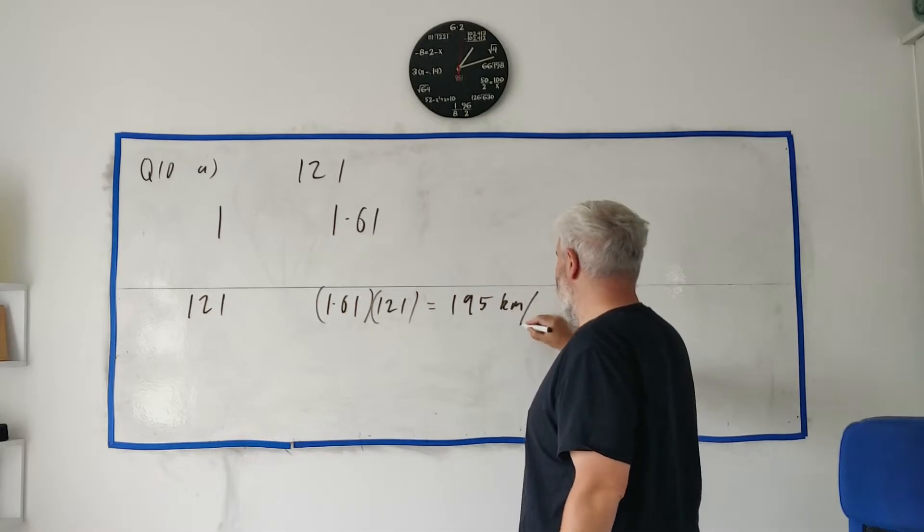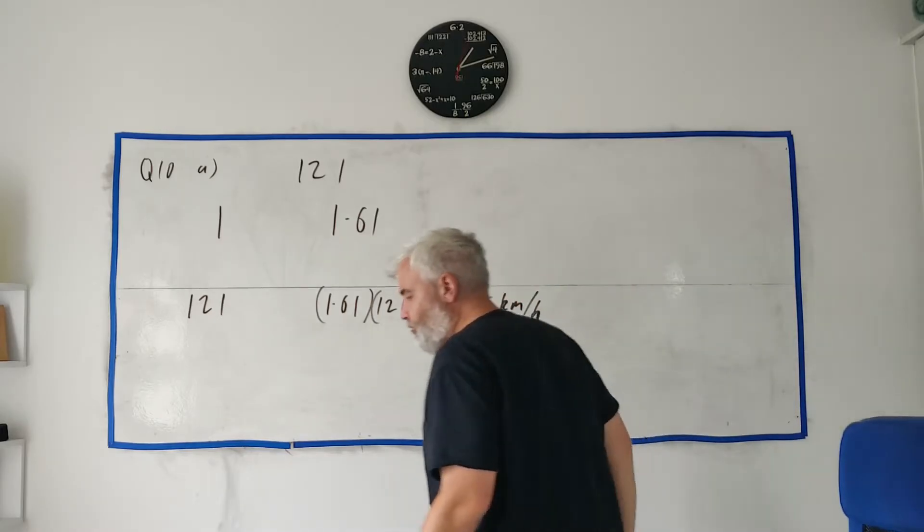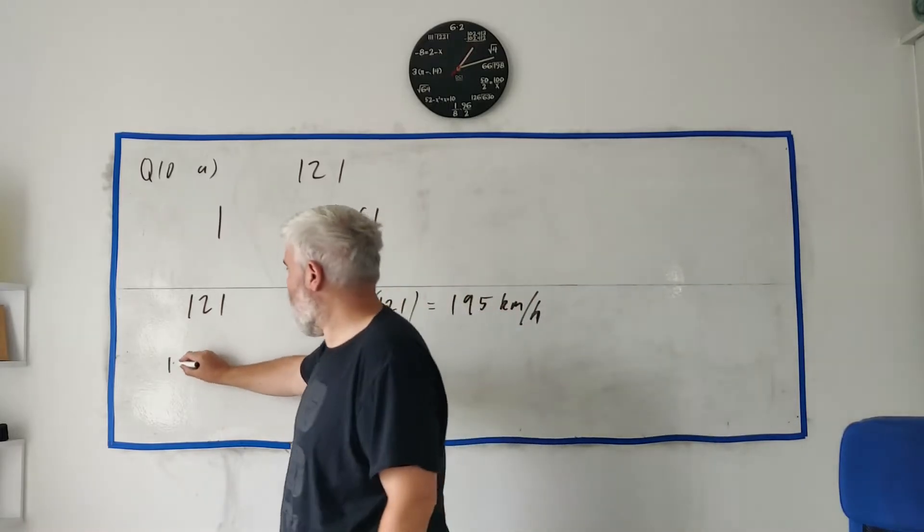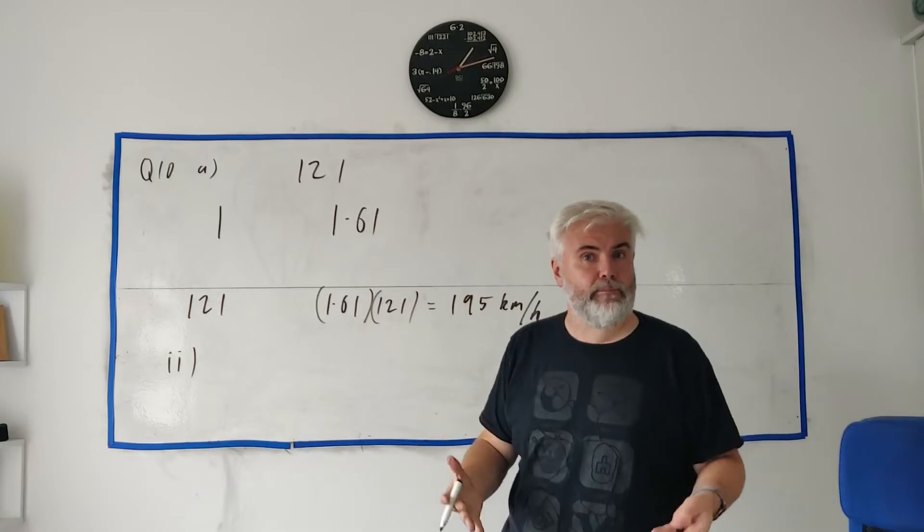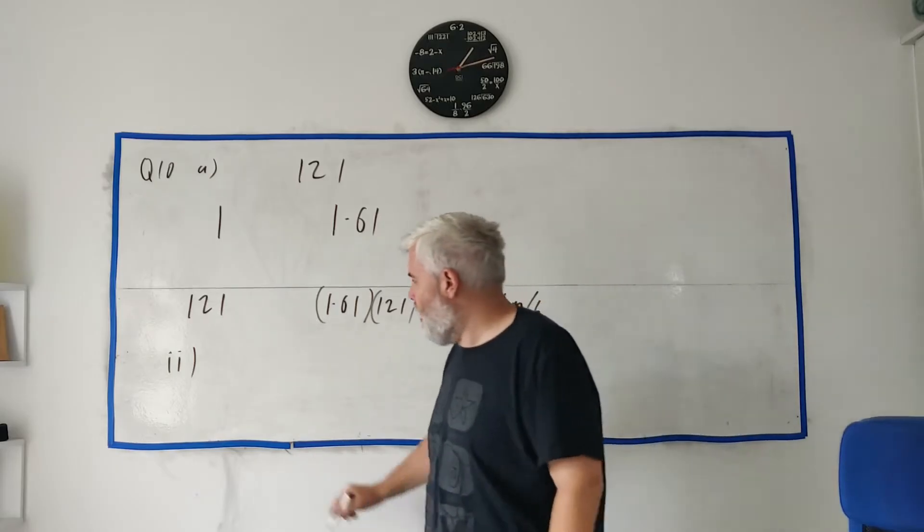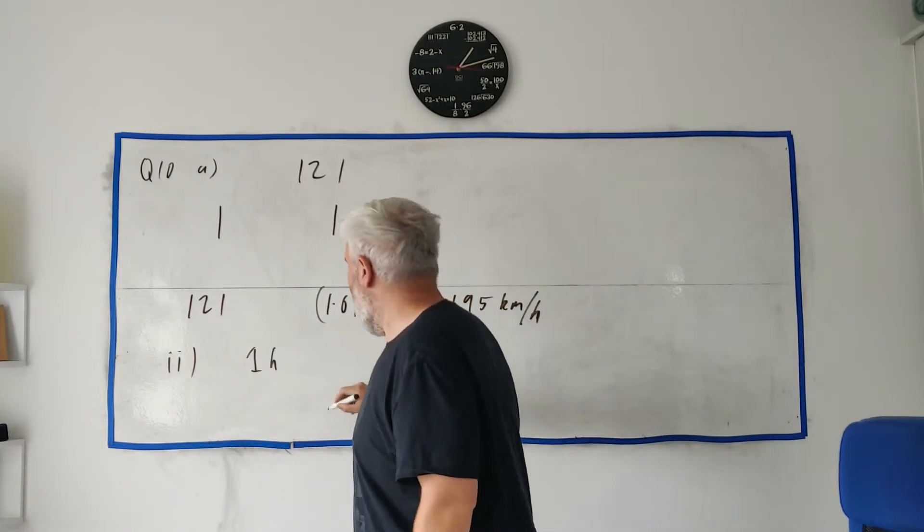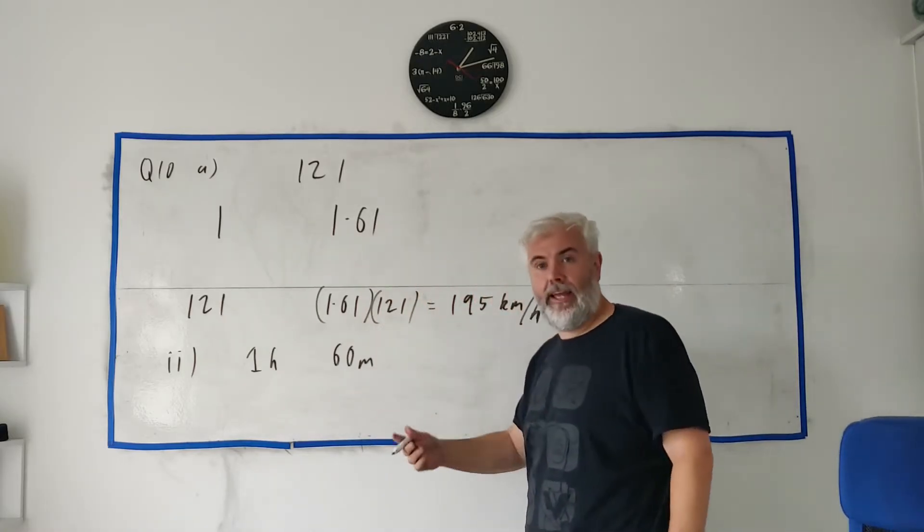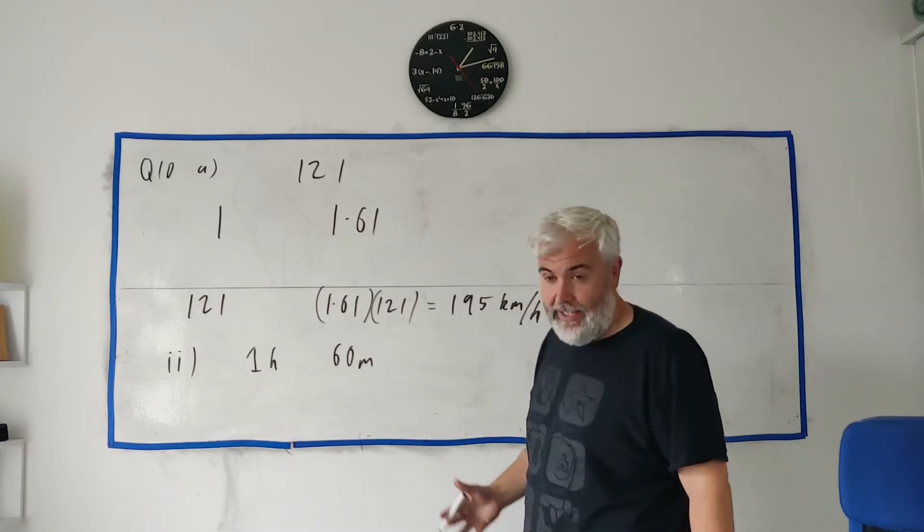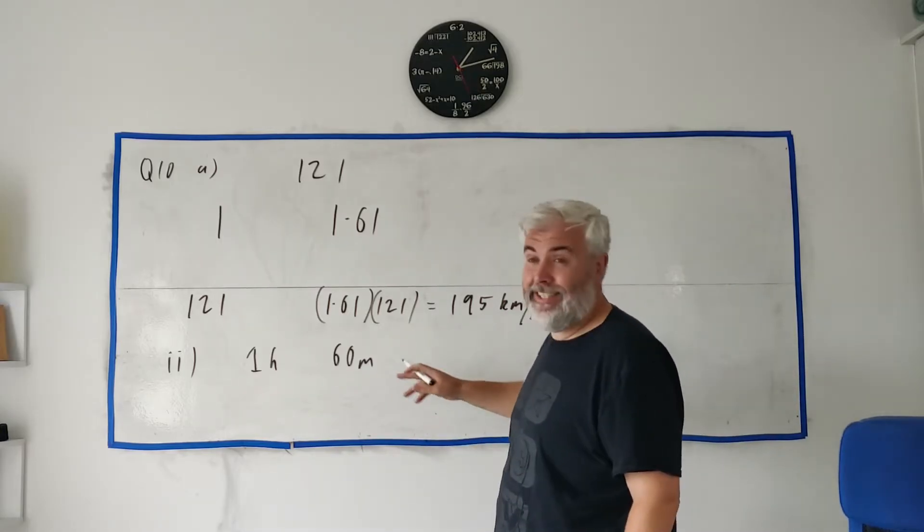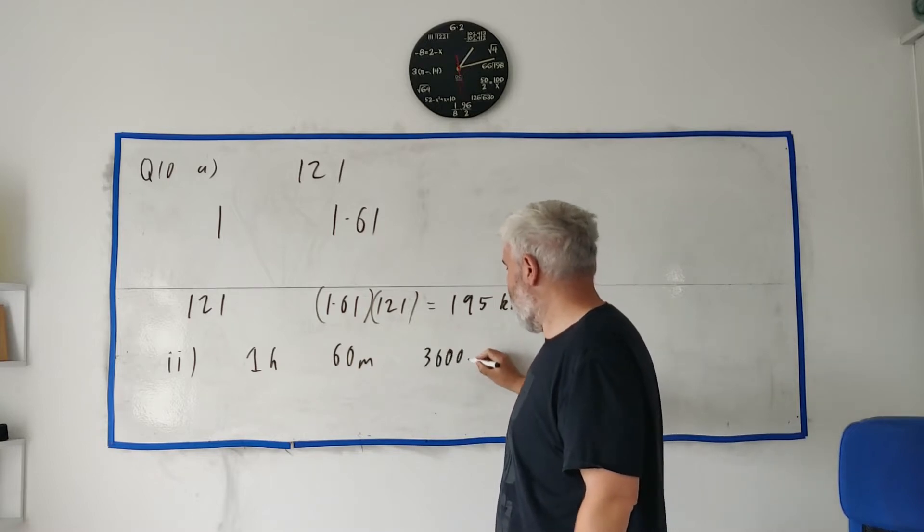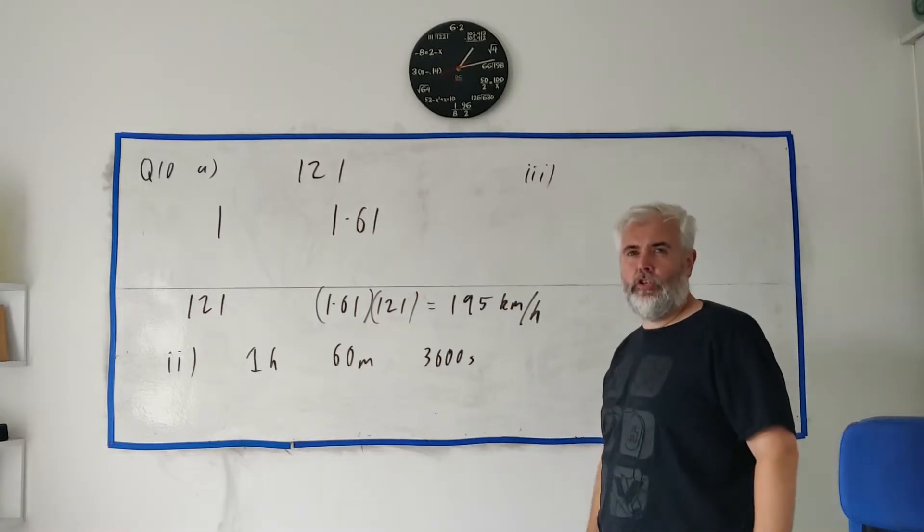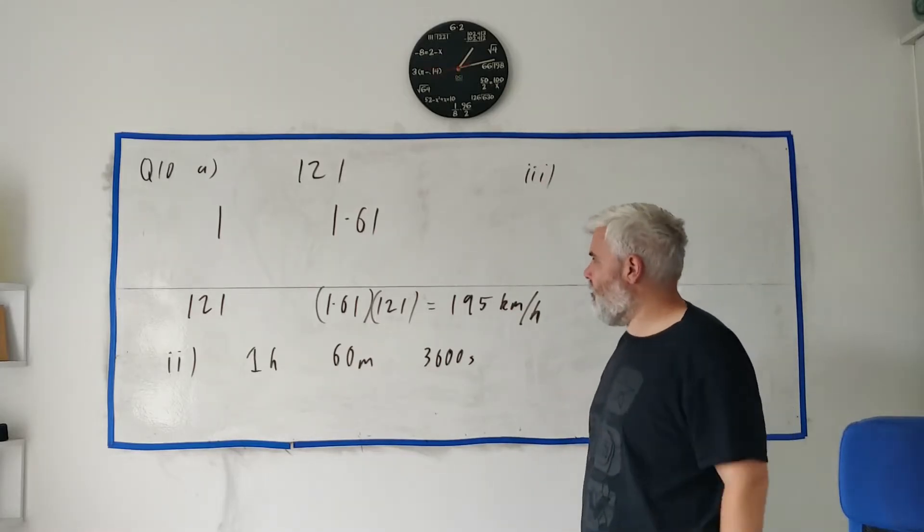Part two they want you to convert one hour into seconds, basically how many seconds are in an hour. One hour is the same as 60 minutes, and there's 60 seconds in one minute, so 60 times 60 is 3600 seconds.